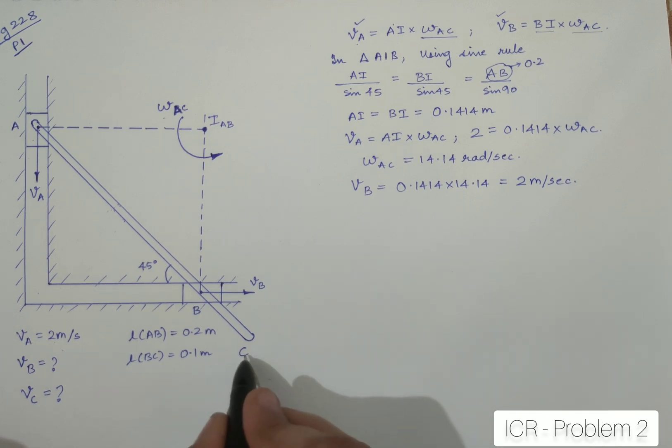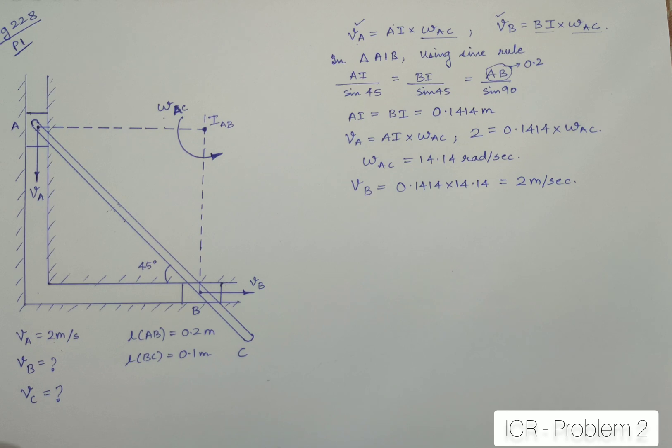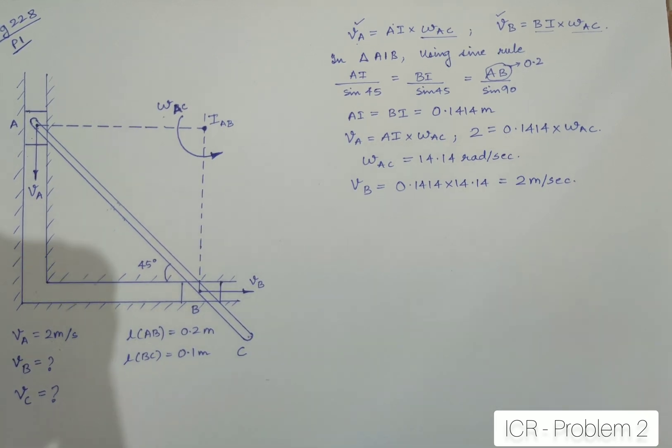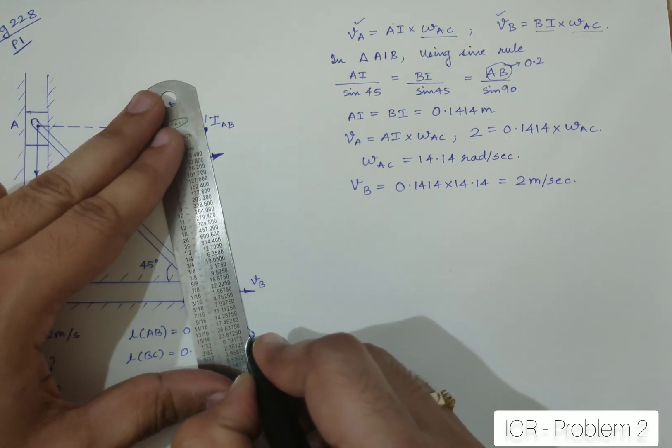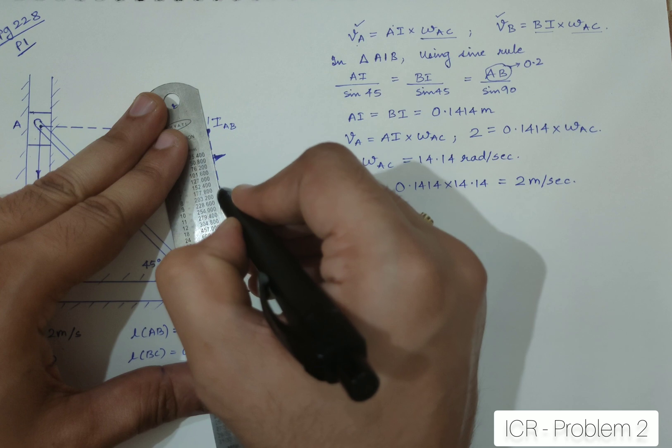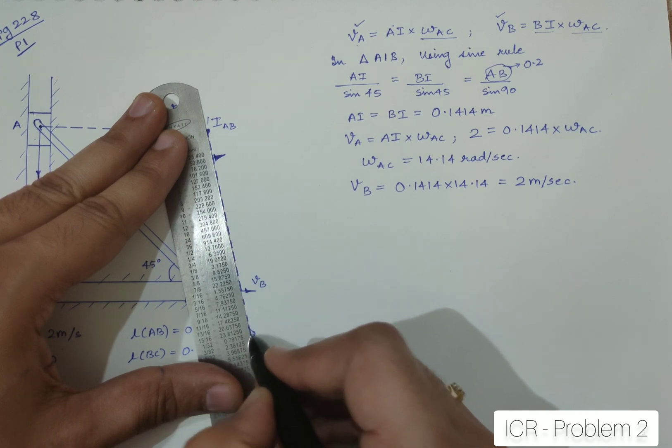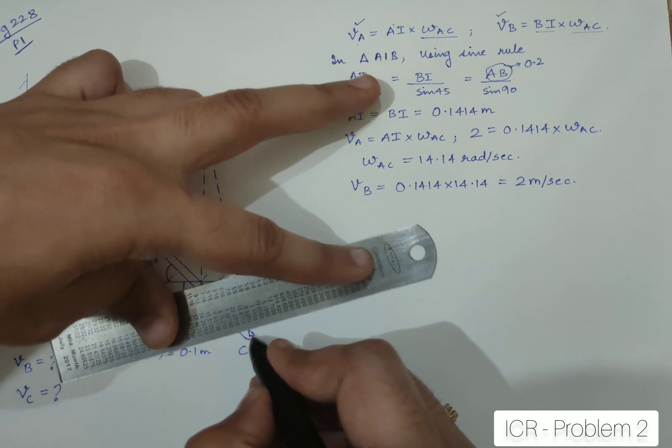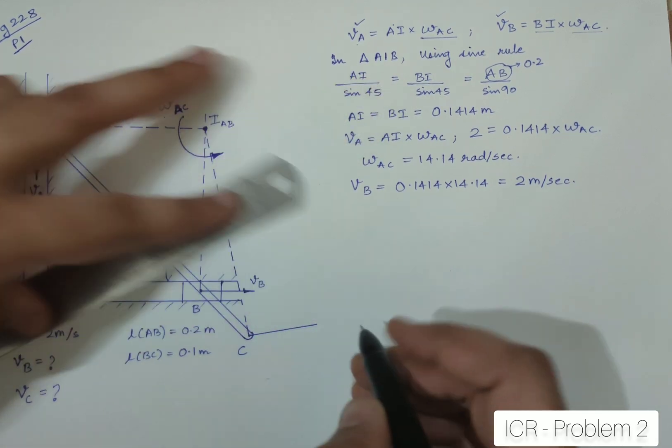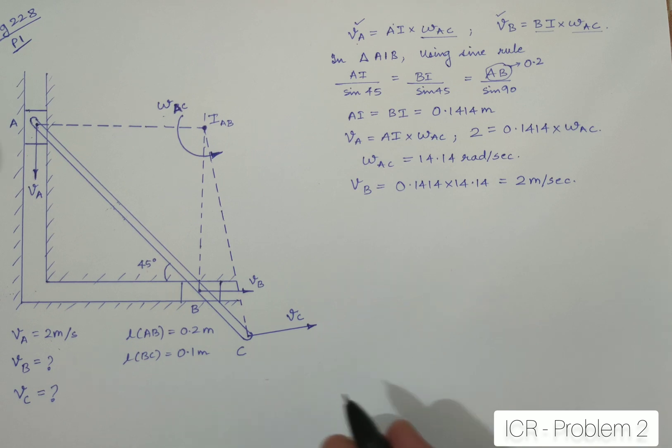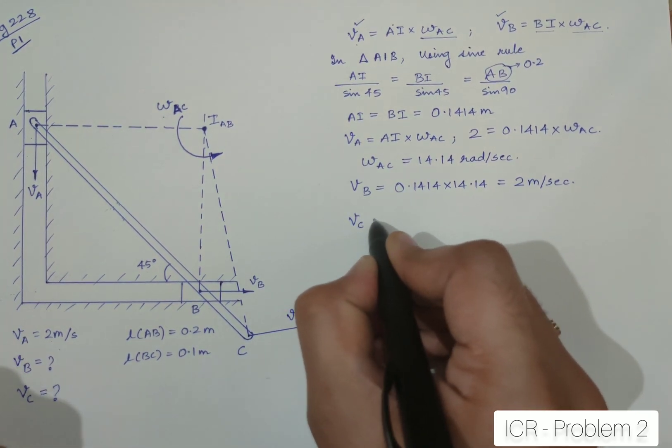Now, let us move further and try and concentrate on the velocity of the point C which is not asked in the question but I have extended it so that we can go ahead with a few more things into it. How to find out the velocity at C? So, first of all I need to join this point C with my ICR point, so let me join that. The moment you do that, you can draw a perpendicular and this perpendicular will give you VC.